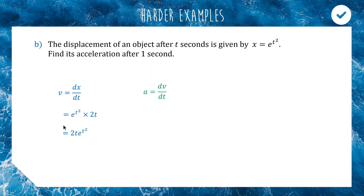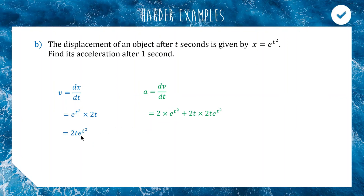Now we differentiate velocity to get acceleration. The velocity 2t·e to the t squared is a product, so we use the product rule. Differentiate 2t to get 2, leave e to the t squared alone; then leave 2t alone and differentiate e to the t squared, which gives 2t·e to the t squared. Adding the two parts together: 2·e to the t squared plus 2t times 2t·e to the t squared, giving acceleration equals 2e to the t squared plus 4t squared·e to the t squared.